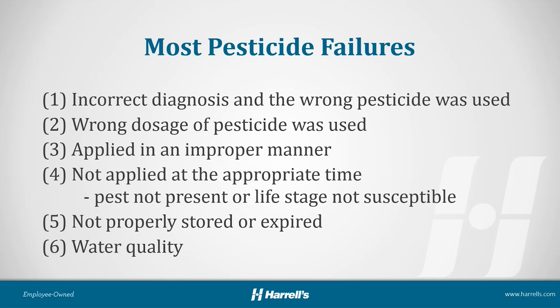Another common failure cause is using the wrong dosage — the rate and the application interval are very important. A lot of research goes into those label instructions, so make sure you're following the label. Also consider the type of active ingredient and mode of action. For example, if you're going after mites on the underside of a leaf and doing a foliar application with a contact-only miticide, you may get poor control. You may need to switch to something with greater translaminar activity or even a systemic product.